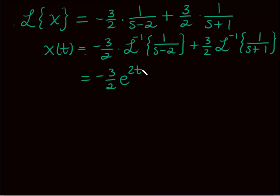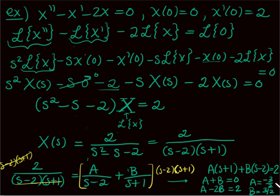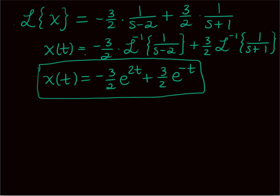So the Laplace of X equals negative 3 halves times 1 over (s minus 2) plus 3 halves times 1 over (s plus 1). Now I just need to take the inverse Laplace transform. So x of t equals negative 3 halves e to the 2t plus 3 halves e to the negative t. This solves the initial value problem without having to separately find the complementary solution and then apply initial conditions.